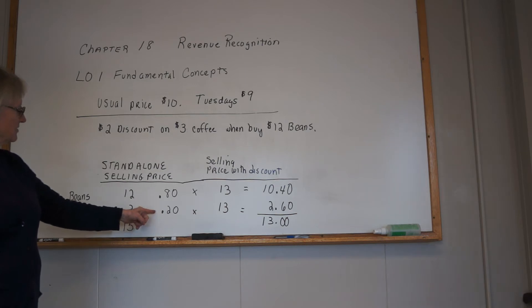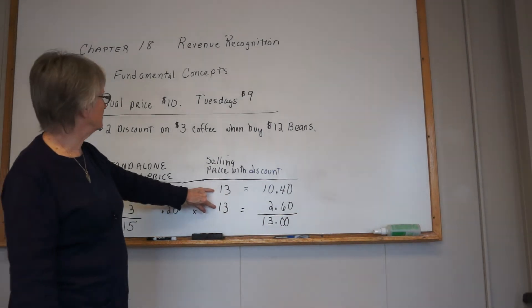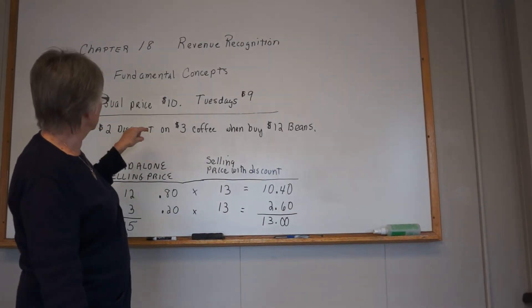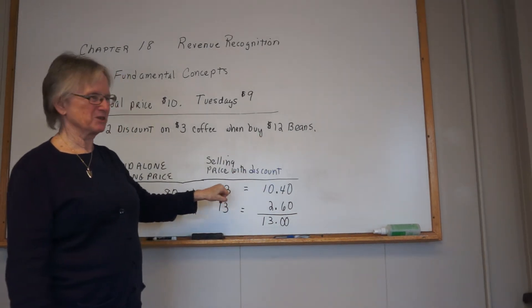Three divided by 15 is 20% - the coffee makes up 20%. You multiply that by what the customer is actually going to pay, which is $3 minus $2, so a buck for the coffee plus the beans at $12, for $13 total.